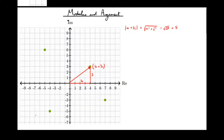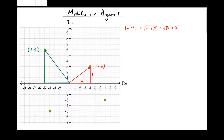Let's try it again with this one: minus 5 plus 6i. We can see it's a distance of 5 horizontally from the origin and a distance of 6 vertically. Therefore, the modulus of minus 5 plus 6i equals the square root of 5 squared plus 6 squared, which is root 61. And that's as simple as it gets since 61 is a prime number.